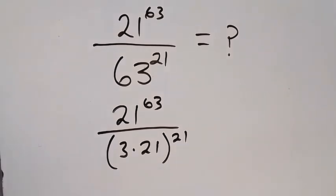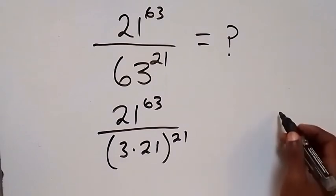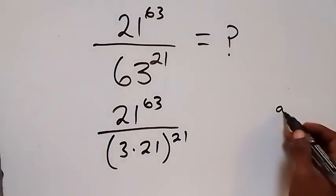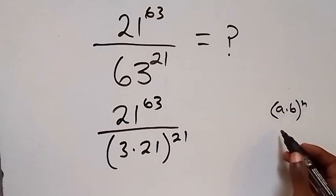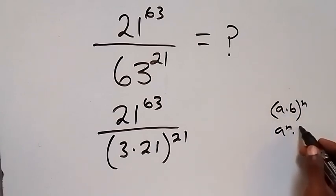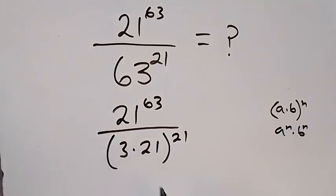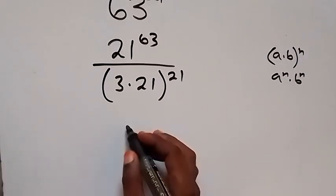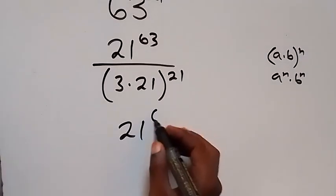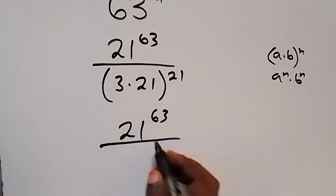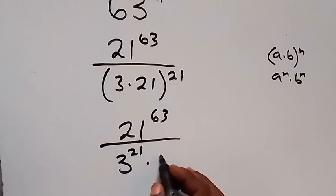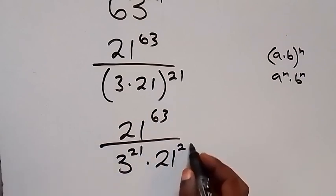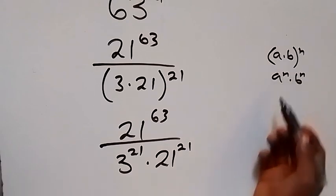Then, from the law of indices, when we have (a times b) raised to power n, we can write this as a raised to power n times b raised to power n. So when we apply that here, it will become 21 raised to power 63 divided by 3 raised to power 21, then multiplied by 21 raised to power 21, applying this law of indices.